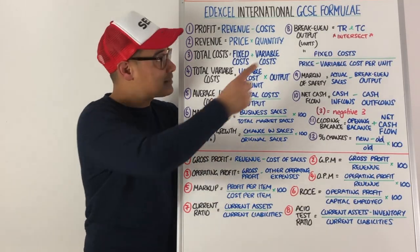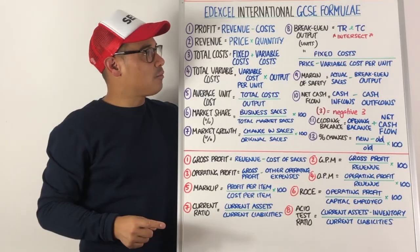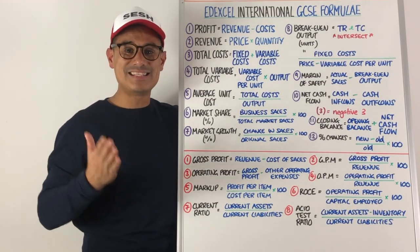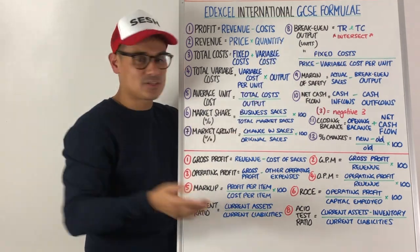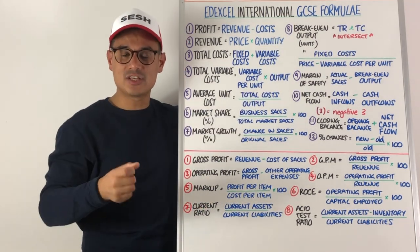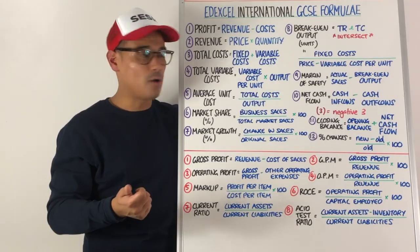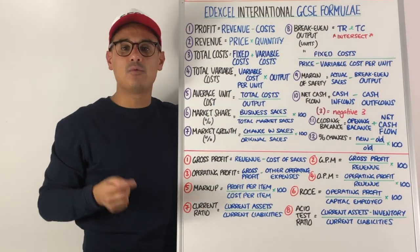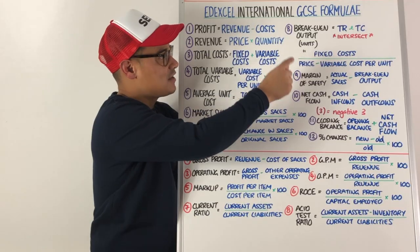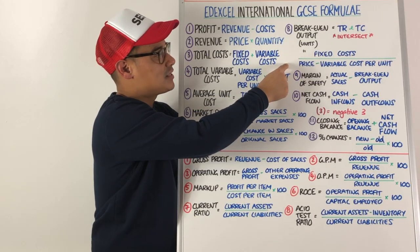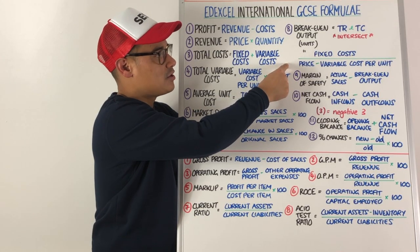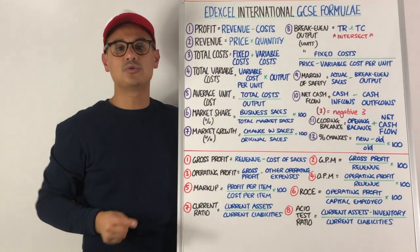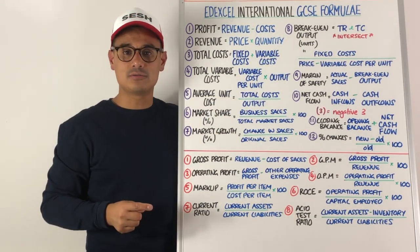Number eight — you've got to learn this one — breakeven output. Breakeven output is where total revenue and total costs intersect; where they cross, and you'd read that down in units on your output axis. But you can also calculate breakeven output with a formula: fixed costs divided by price minus the variable cost per unit. That gives you the breakeven output in units — the same point as where total revenue equals total costs.